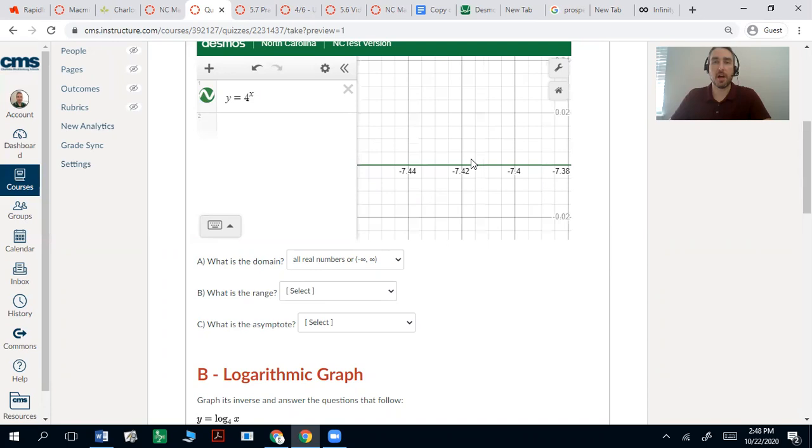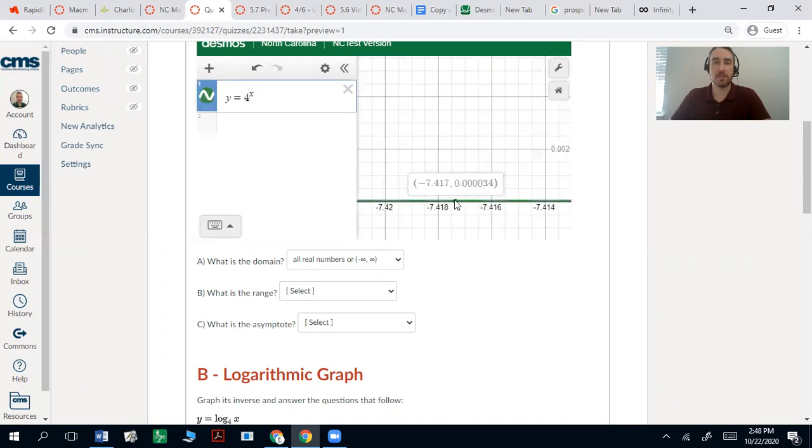but is always going to be a little bit higher, never actually touches zero. So you see how small that is—0.000034.